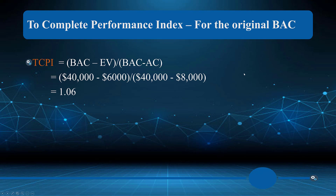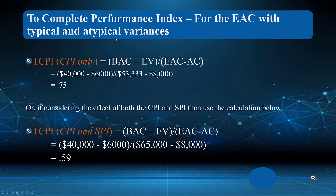The to-complete performance index (TCPI) for the original BAC takes BAC minus EV, divided by BAC minus AC. We arrive at 1.06, meaning to finish the project at the original budget, we would need to be more efficient going forward — which, given current performance, means we're likely going to end up over budget.